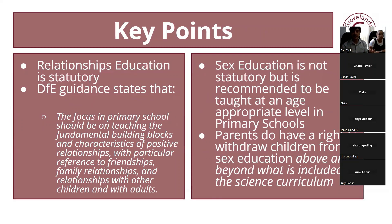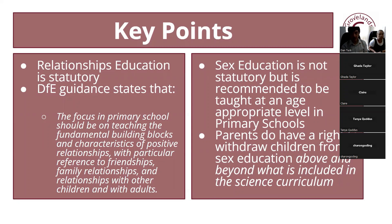What does the DfE's guidance say? Relationships education is statutory, which means all children have to do it. The DfE says the focus in primary school should be on what makes a really positive, healthy relationship — thinking about friendships, family relationships, or relationships children might have with other children or adults. Sex education, however, is not statutory, but it is recommended to be taught at an age-appropriate level in primary schools. You do have the right to withdraw your child from sex education, as long as it's not what's covered in the science curriculum. All children must do the relationships content.